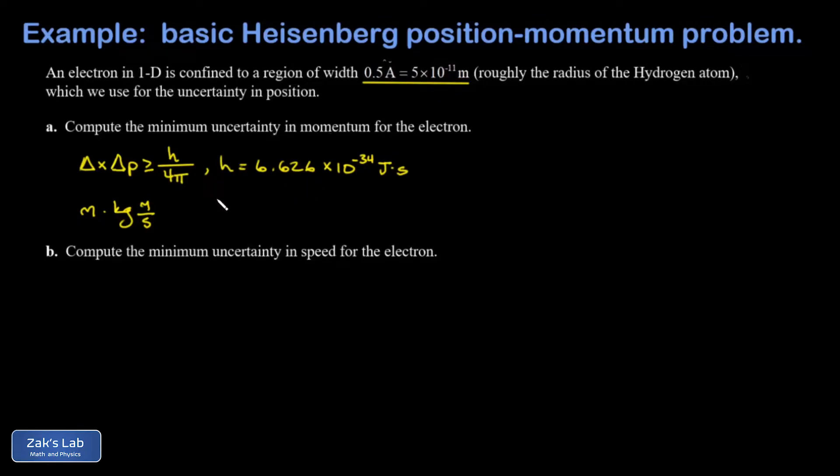On the right-hand side, I have joules times seconds. There's more than one way to break down joules, but using the kinetic energy formula, a joule is kilogram meter squared per second squared. One factor of seconds cancels, giving kilogram meter squared per second. So the units agree on both sides.